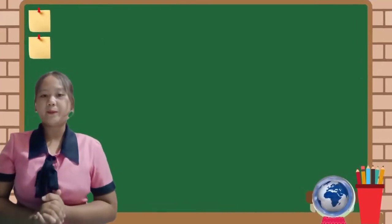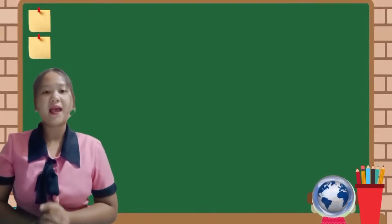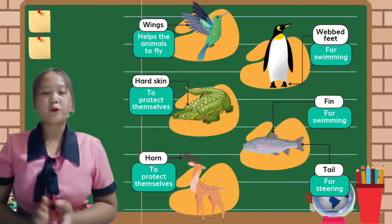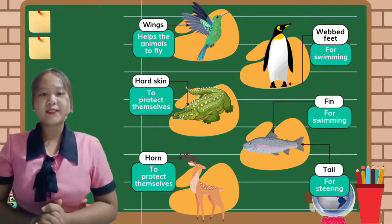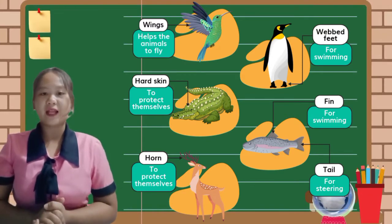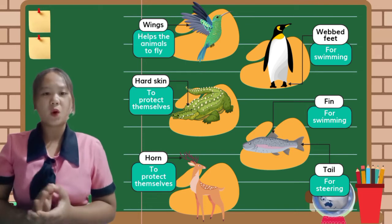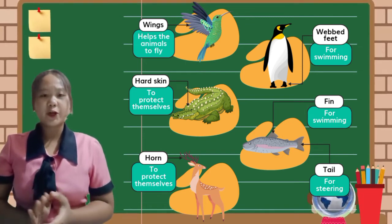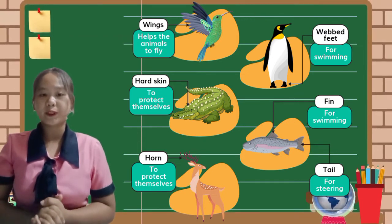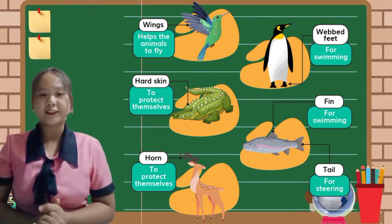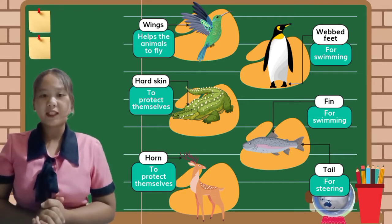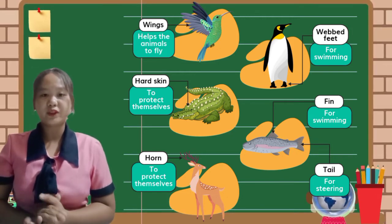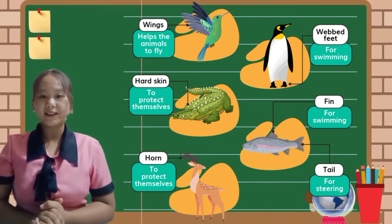Each body part of animals has its own function and importance. For instance, birds have wings which help them to fly. Crocodiles have hard skin in order to protect themselves from possible predators. Deer have horns to protect themselves and to establish dominance over other male deer. Penguins have webbed feet used for swimming. Lastly, fish have fins used for swimming, balance, and stability.